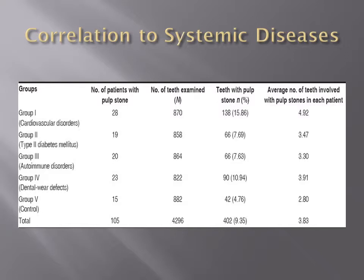Some research has suggested that there is a correlation between certain systemic diseases and pulp stones. As you can see in the chart, Group 1, which is cardiovascular diseases, has the highest percentage of teeth with pulp stones at 15.8% of the teeth tested, with an average of around 5 pulp stones per patient.